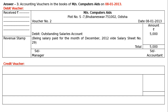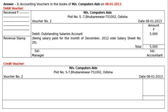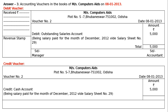Then your credit voucher. We have to write down the shop name and we have to write down the voucher number, that is voucher number 2 — this is credit voucher number. And date is 8th January 2013. We have to write down the amount with rupee symbol. Credit will be given — we are paying cash. Cash is an asset, it is being decreased, cash is going out. Decrease in cash, credit to cash account, 5,000. Narration: being salary paid for the month of December 2012, vide salary sheet number 29. Amount total: 5,000. Get it signed by SD manager in the left side, and SD accountant towards the right side.